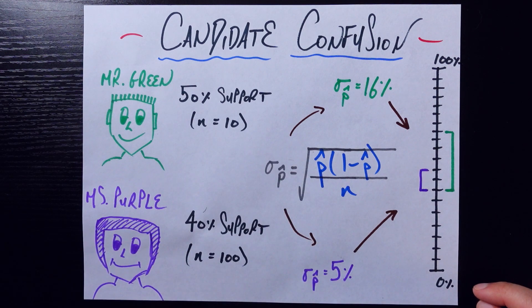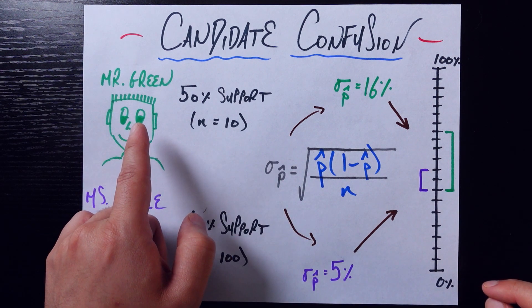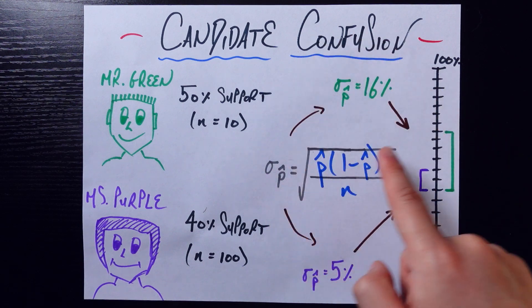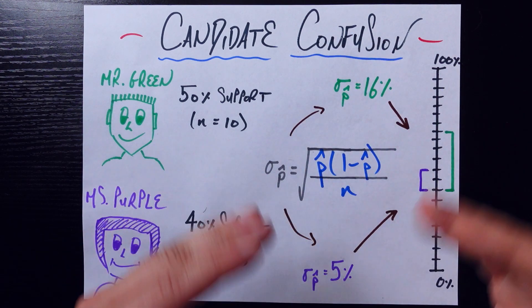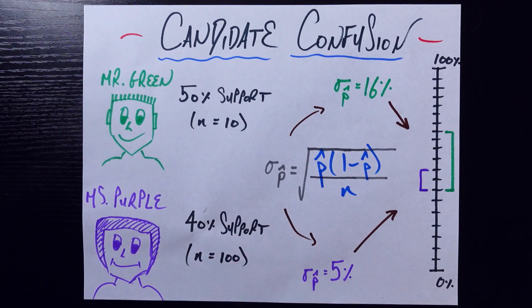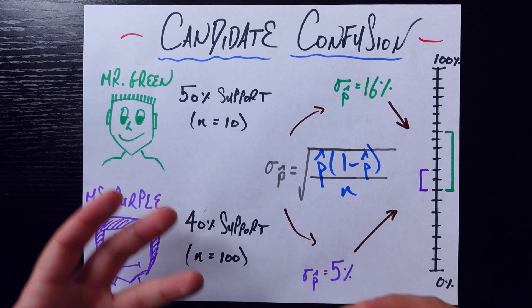We can prove that obviously, but if you plug this in for Mr. Green, then you get that the sample standard deviation is going to be 16%. But for Ms. Purple, it's much smaller, at just 5%, because we had so many more samples, so we're more certain about this 40% than we are about this 50% here.